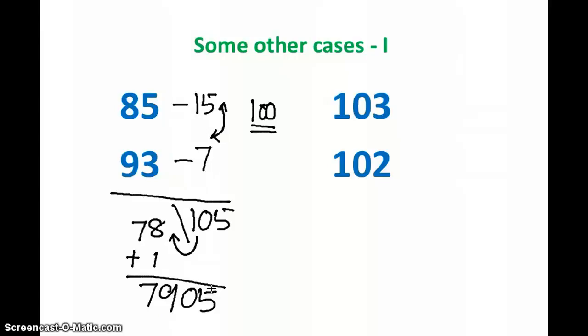So when you have a higher number that is not a two-digit number, why are we trying to keep two digits on the right side? Because we have taken the base as 100. We have to keep two digits on the right side. Similarly, when the base is 1000, that means one has three zeros, then we have to keep three digits on the right side.